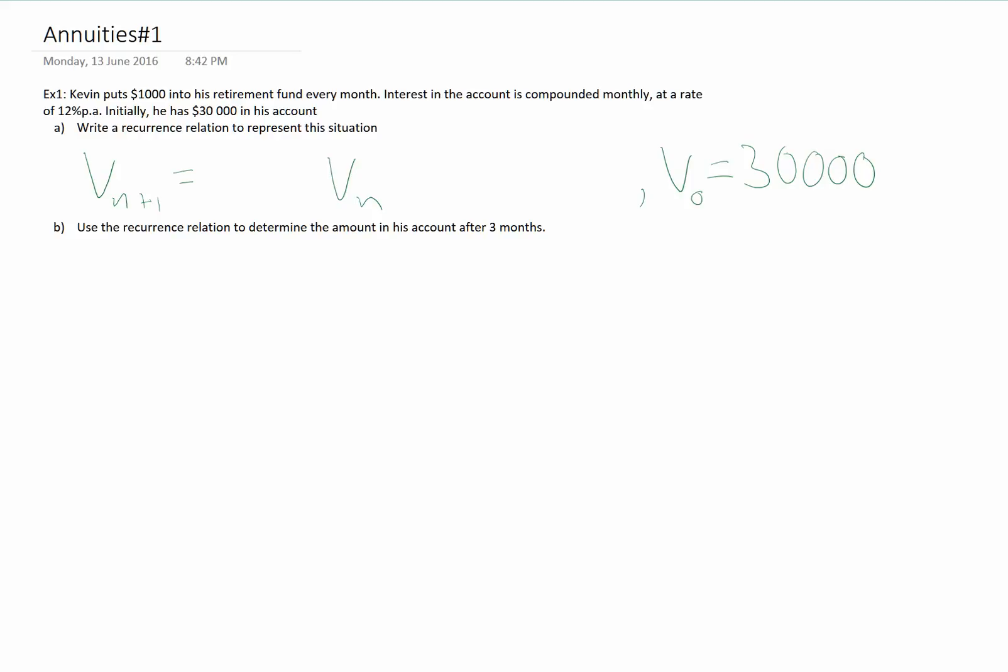Now, the rate is 12% per annum, so rate is our common ratio. That's R, the interest that's being charged. So that's 1+R, which is the interest rate per period. That's 12 over 12, over 100.